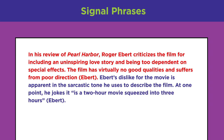Note that the first two sentences of Ava's paraphrase provide a summary, while the third sentence offers Ava's own commentary on the review. The fourth sentence returns to a summary of the review and includes a direct quote. Can you spot the signal phrases? There are two. Ava begins with 'In his review of Pearl Harbor' to let the reader know the ideas that follow belong to Ebert. Then Ava uses the phrase 'Ebert's dislike for the movie is apparent,' letting the reader know she is offering interpretation rather than simply summarizing.